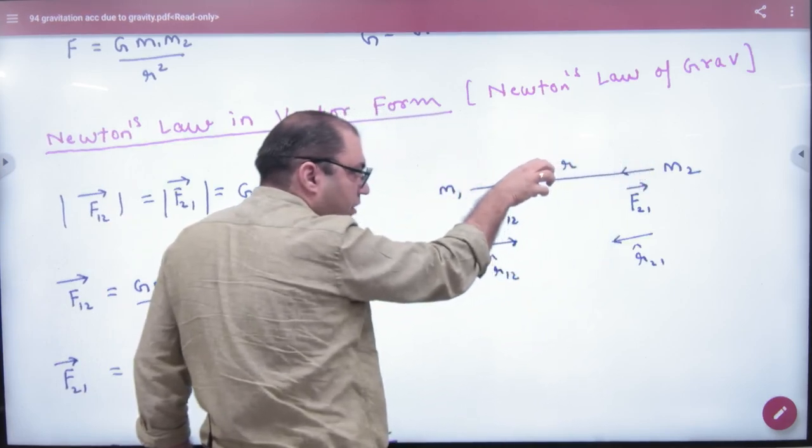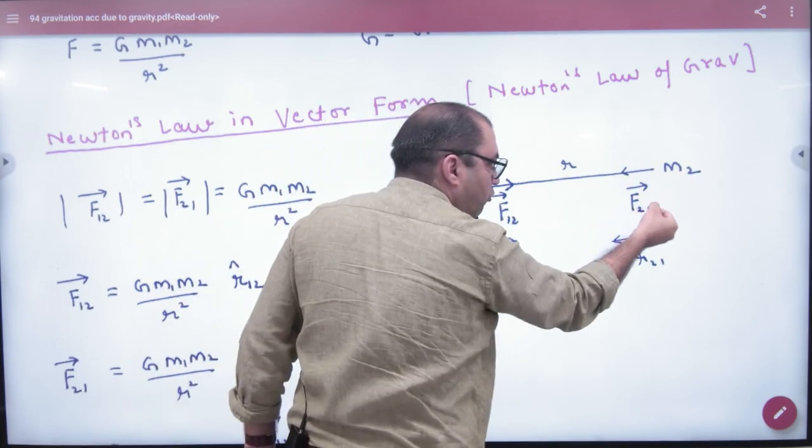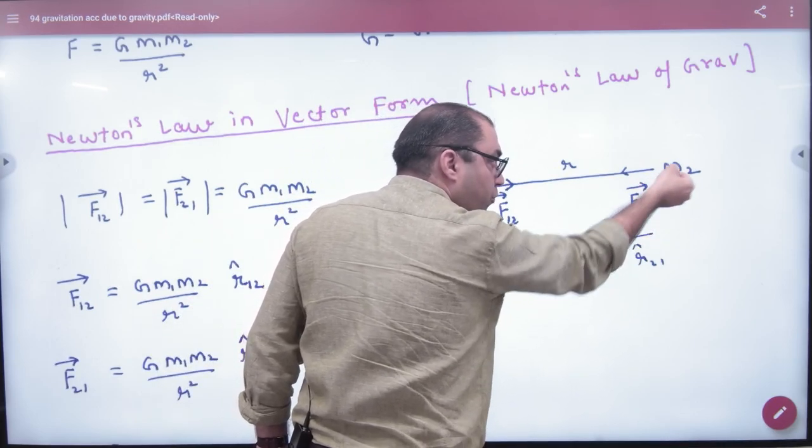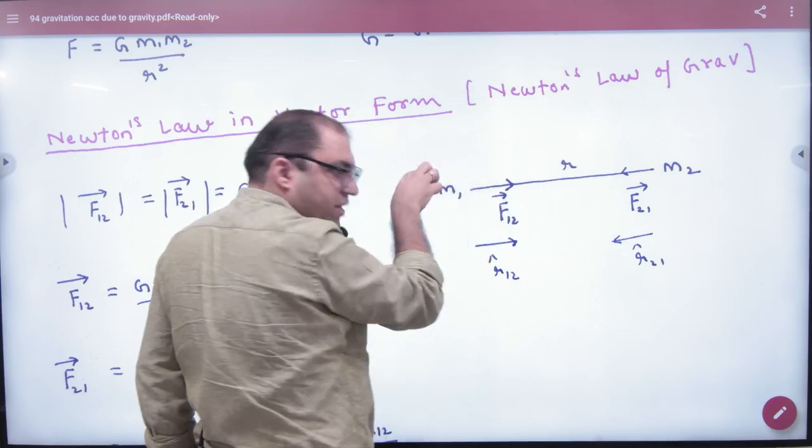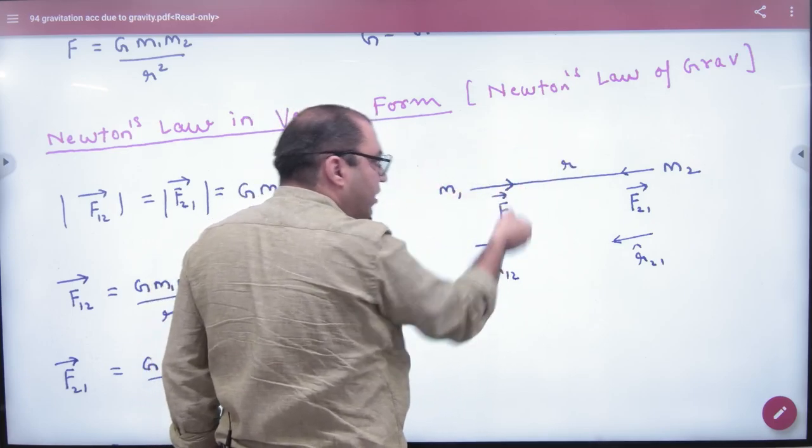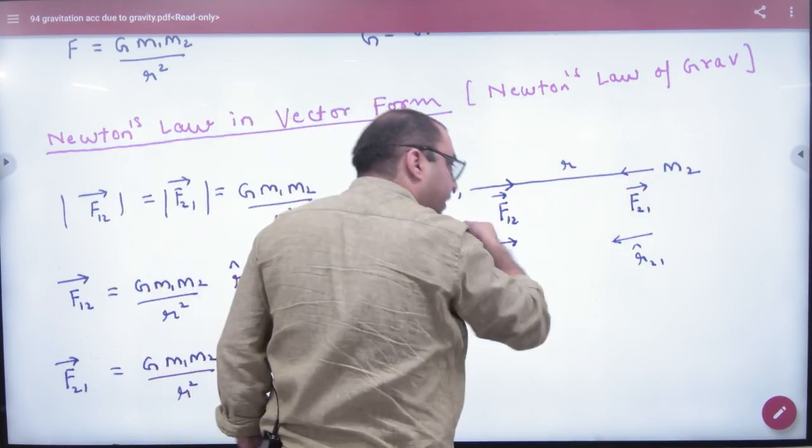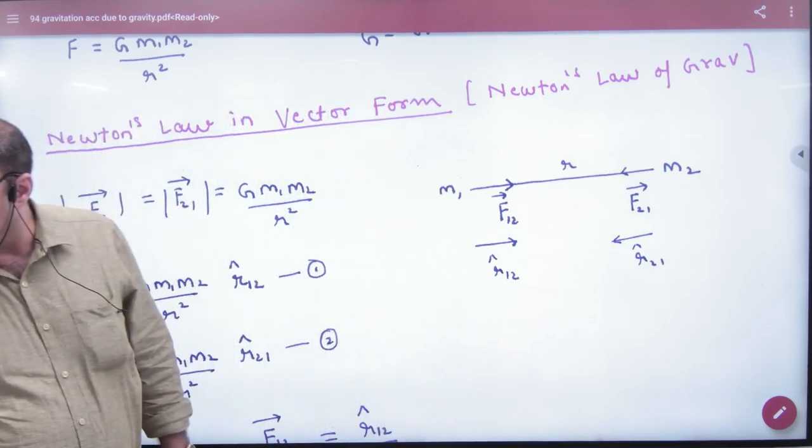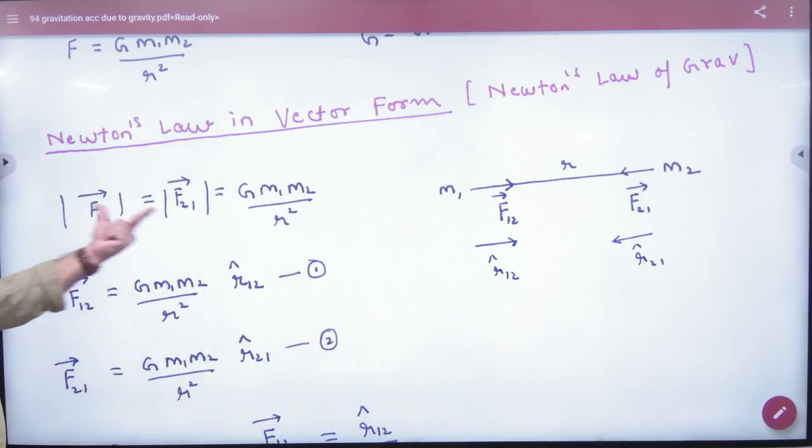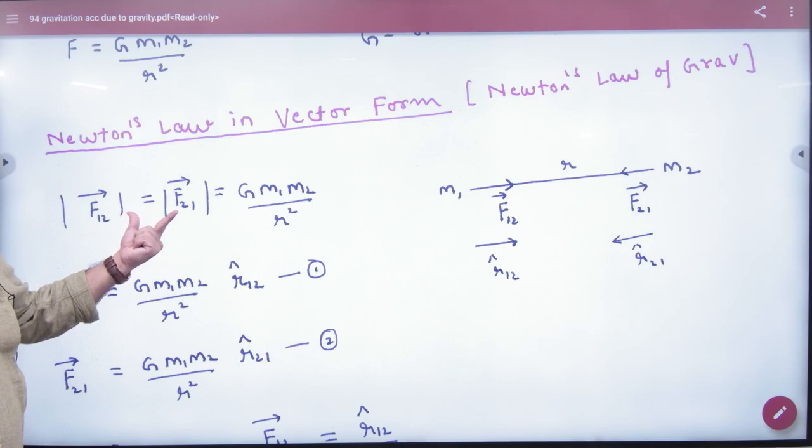m1 has to raise m2 by a force of F2,1 vector. F2,1 means force on 2, who put it? 1. And F1,2 vector means force on 1, who put it? 2. Is the diagram clear here? So if I ask their magnitude without the direction, what will be the answer? Yes, m1, m2 by r squared.